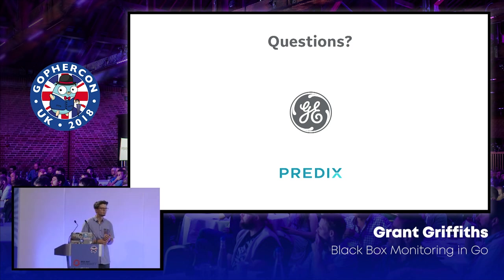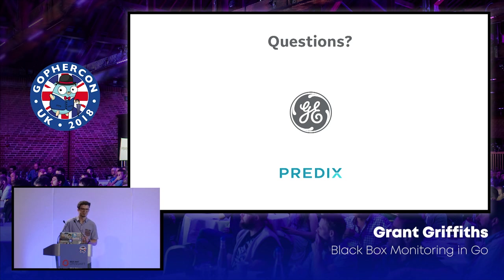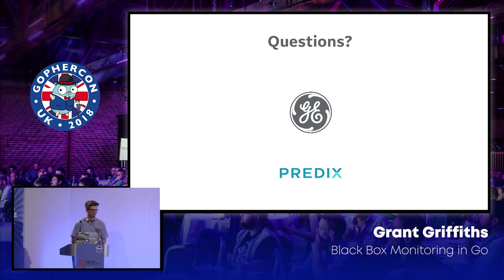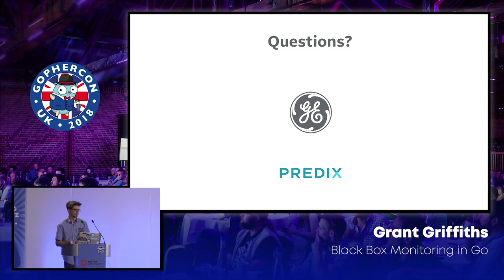Question: How do you monitor your probes? We use New Relic and white-box monitor our probes using the New Relic agent to make sure those nodes are up. We don't have black box monitors for our black box monitors. New Relic constantly checks them, so if they do go down, that's something we'll catch.